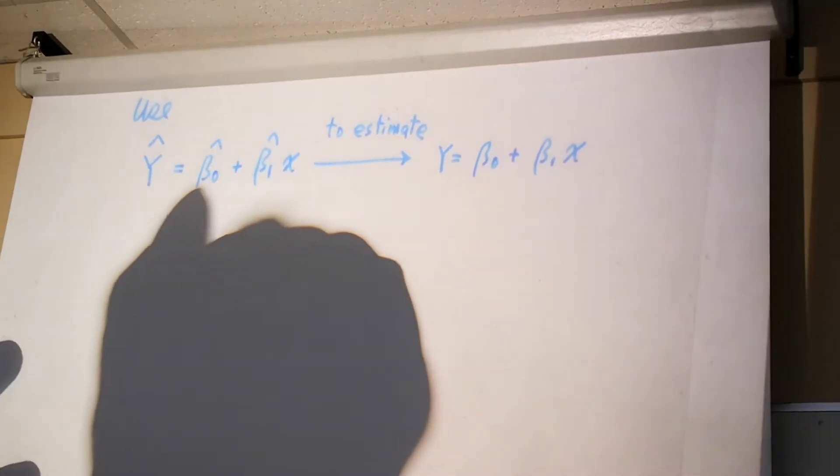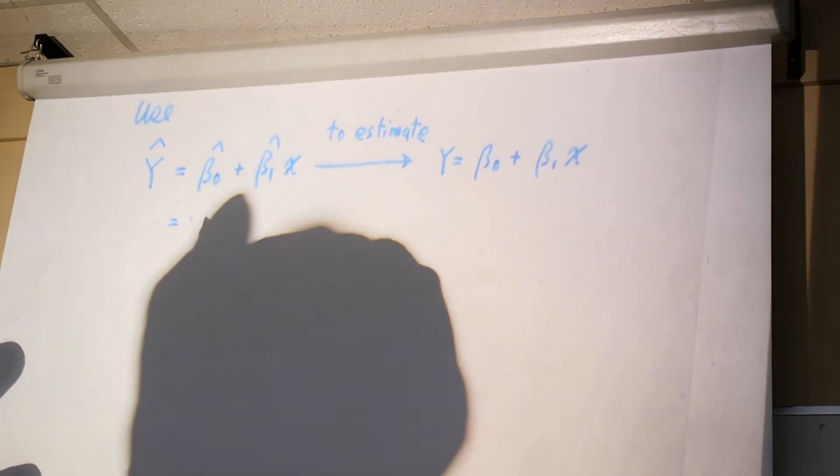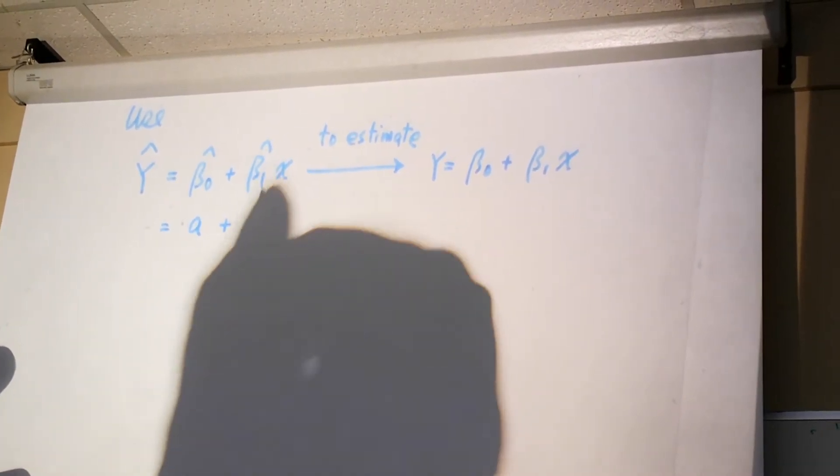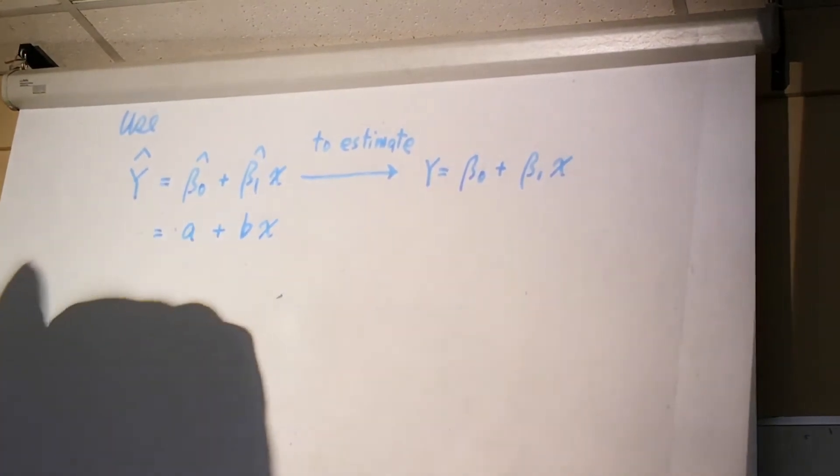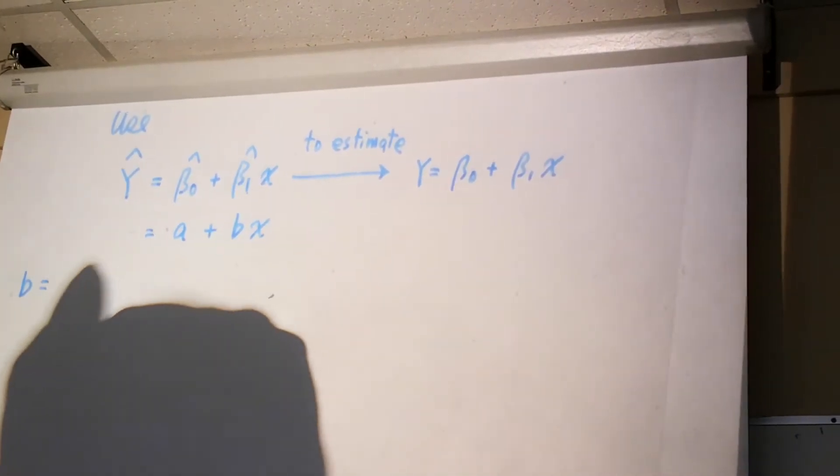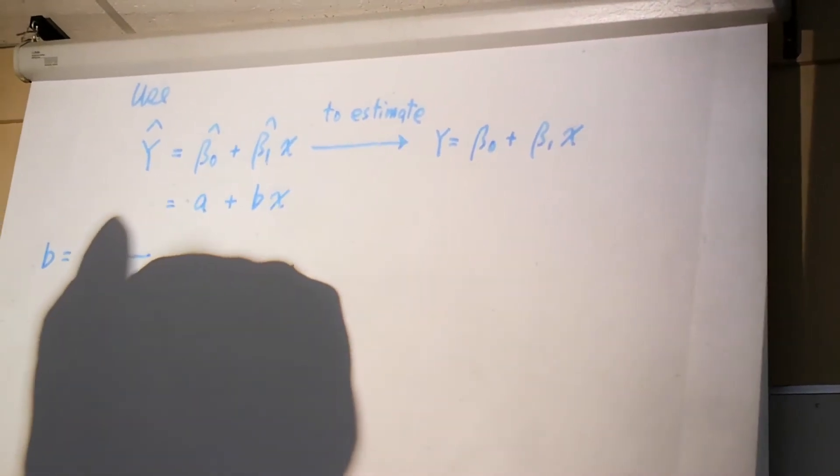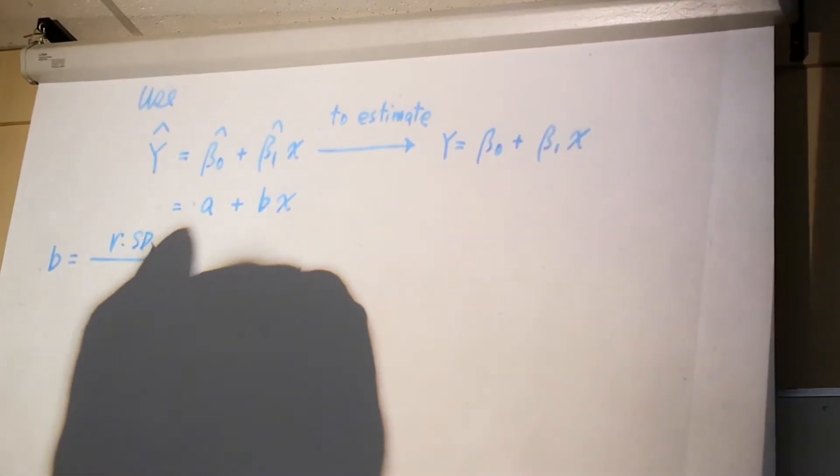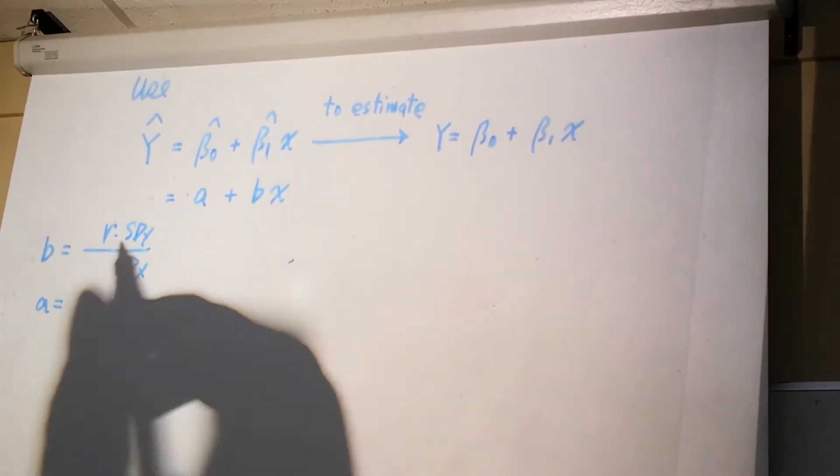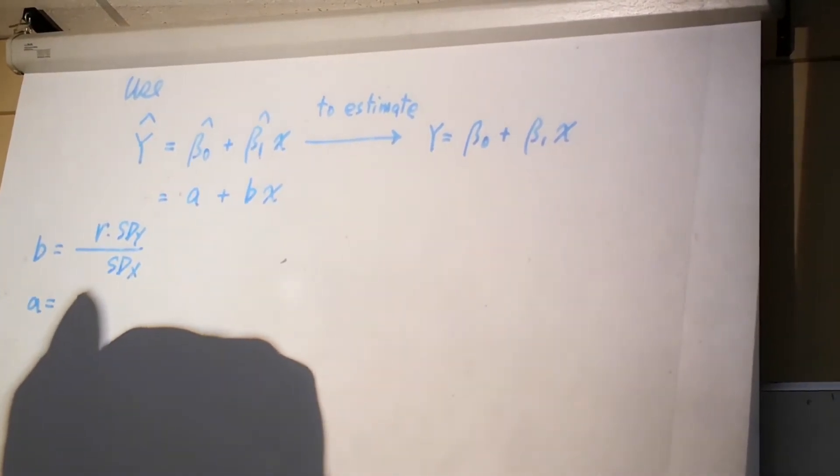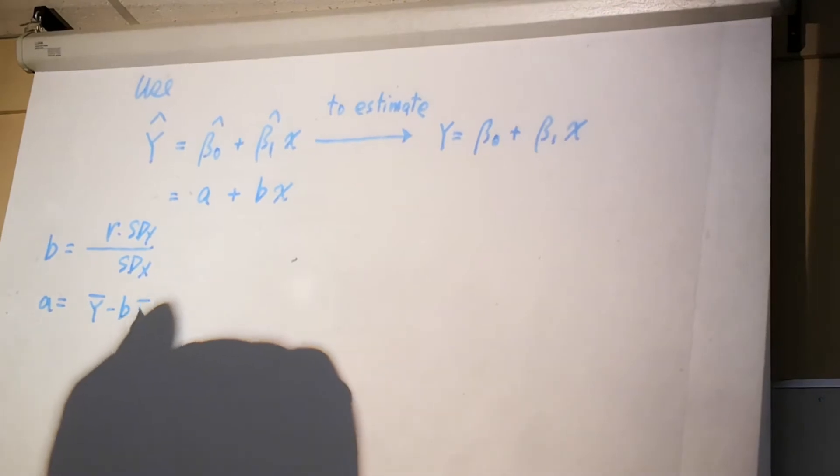In our earlier notation, this is denoted by A and B. B is R times standard deviation of y over standard deviation of x, and A is ȳ minus Bx̄.